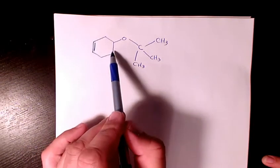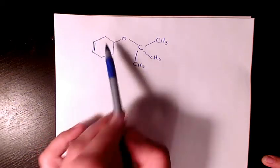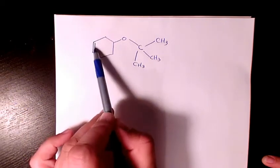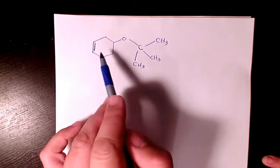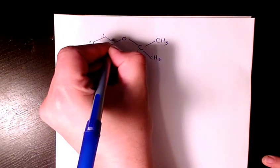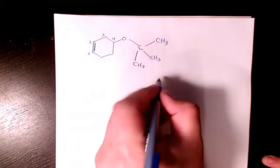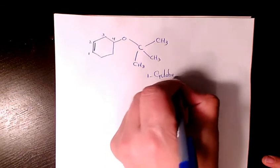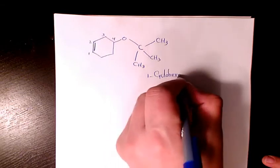So as you see here, if you want to name it, that's cyclohexene because we have six carbons and we have a double bond. So we call it one, two, three, four, so that's going to be 1-cyclohexene.